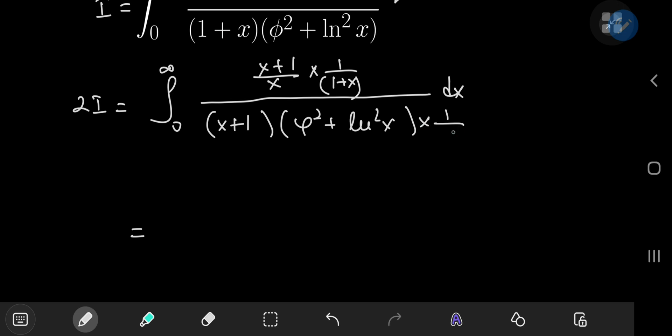So anyway, you have some nice cancellations taking place again. And you have 1 by x divided by this stuff. So that's the integral from 0 to infinity of dx by x times phi squared plus the square of the natural log of x.